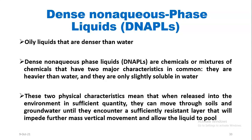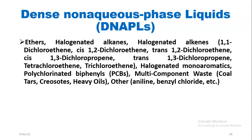Dense non-aqueous phase liquids (DNAPLs) have physical characteristics meaning that when released into the environment in sufficient quantity, they can move through soils and groundwater until they encounter a sufficiently resistant layer that impedes further vertical movement, allowing the liquid to pool. Examples of DNAPLs include halogenated alkenes, halogenated monoaromatics, polychlorinated biphenyls, and multi-component waste.